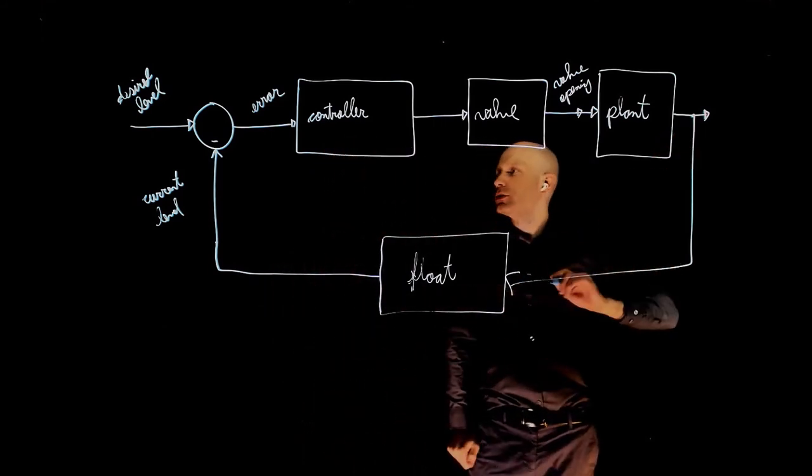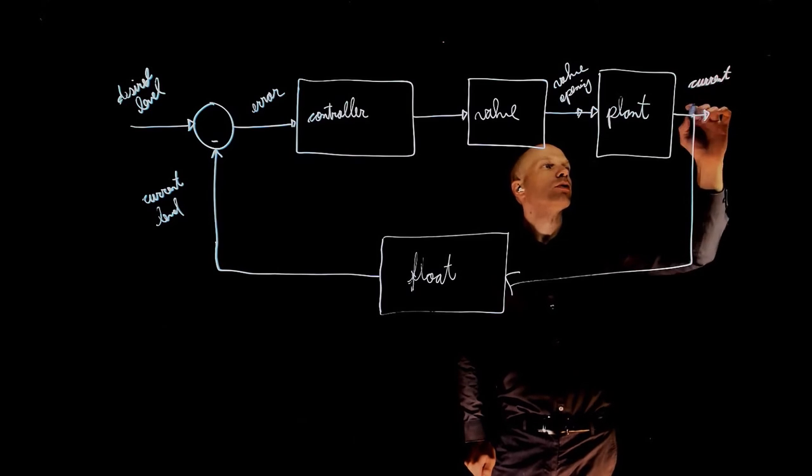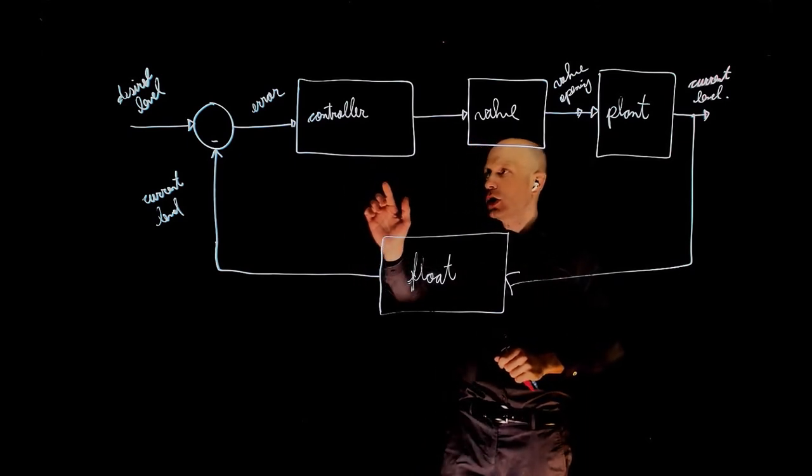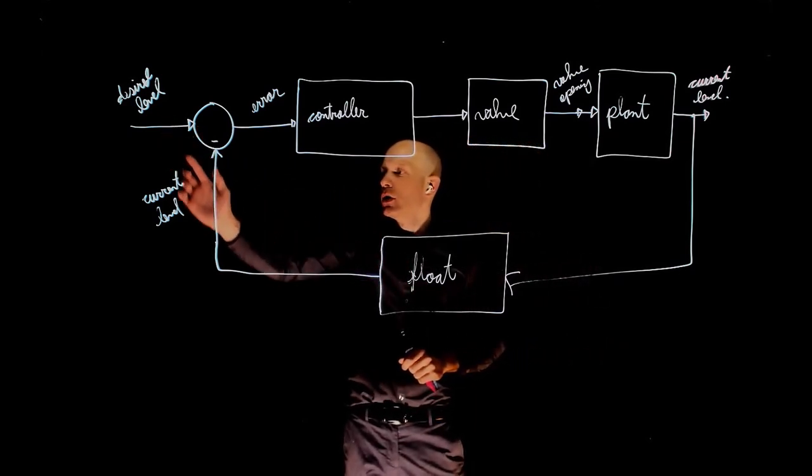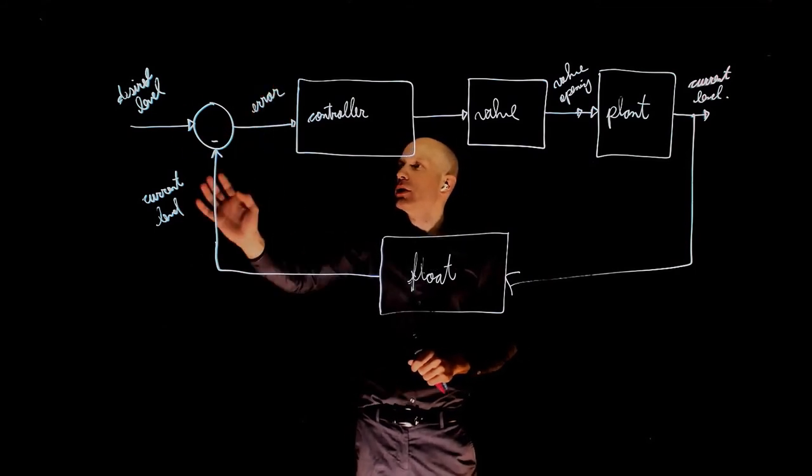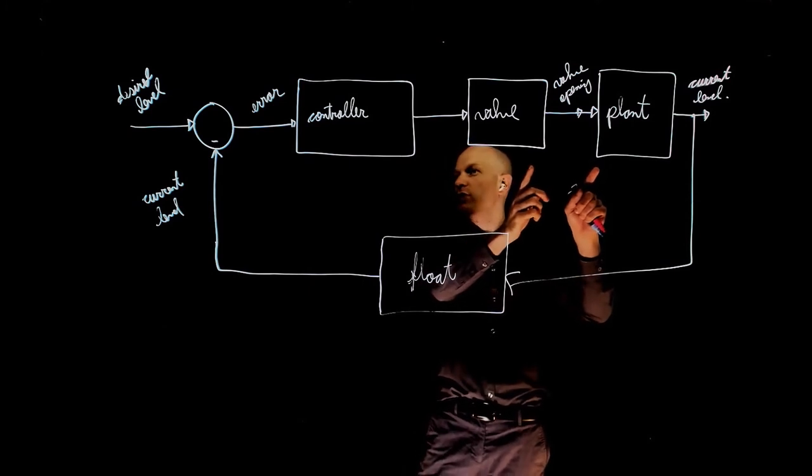So here in the output, this is the current water level, or real water level. Now notice again that the controller is taking actions not based on the desired level, nor the current level, but on the difference between them. The difference is what determines how much you open or close the valve.